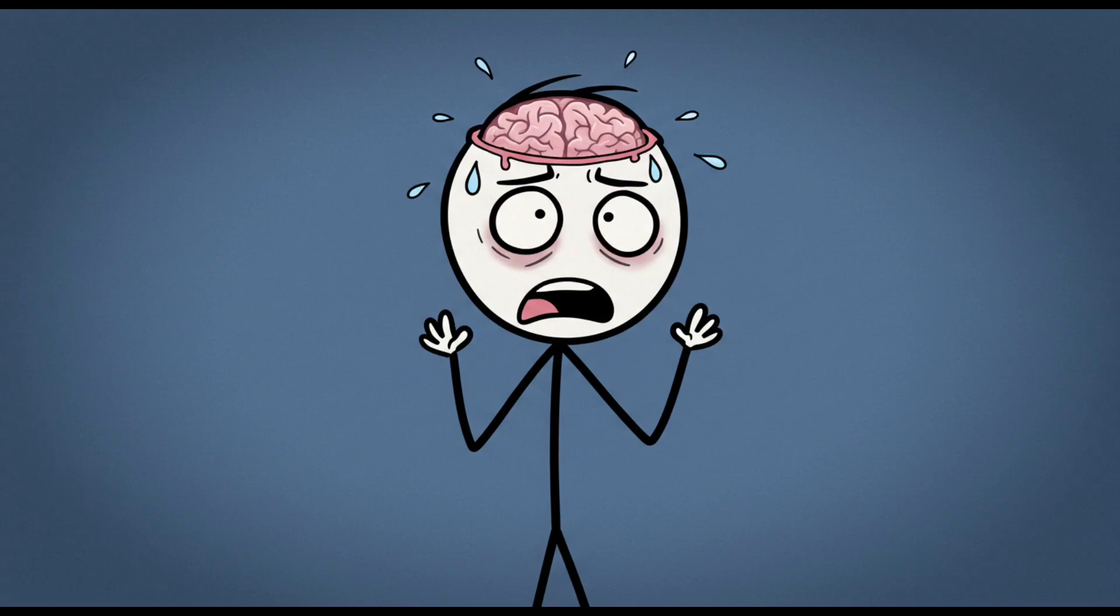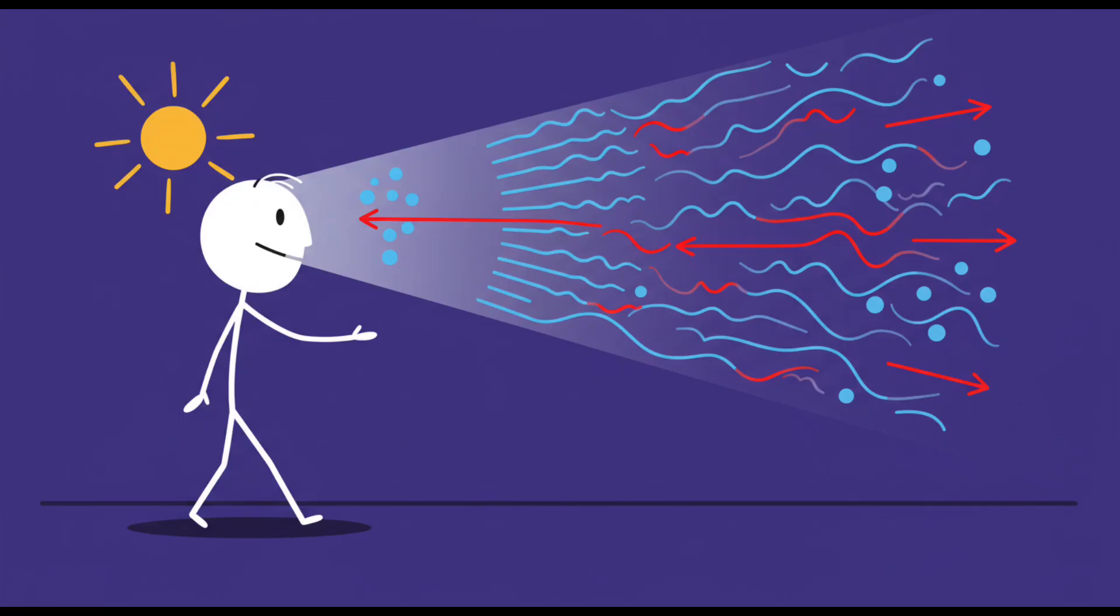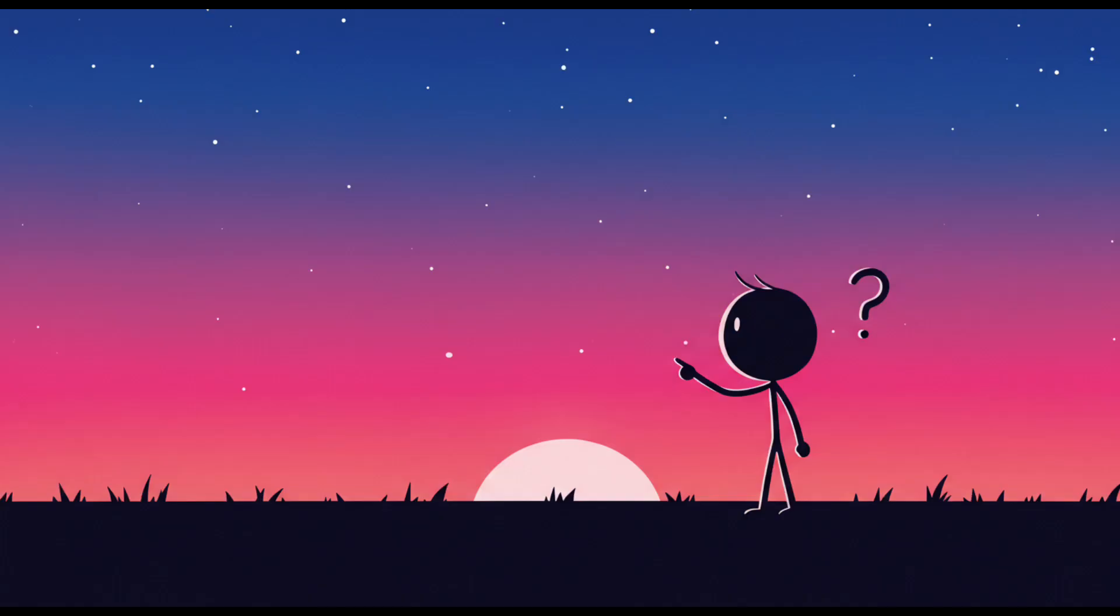You panic, mutter something about light scattering, and then immediately regret it because you sound like a broken science textbook. So here's the deal: the sky is technically blue because sunlight gets scattered by air molecules, and shorter wavelengths of light, like blue, scatter more than longer ones, like red. Great, problem solved, right?